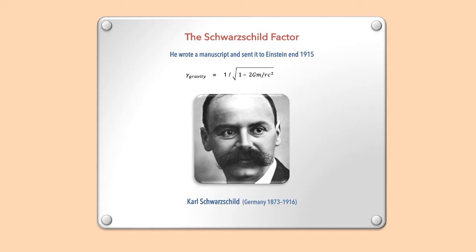Now I show you how to calculate gravitational time dilation. The German Karl Schwarzschild worked out the formula when he was in Russia during the First World War. He suffered from a rare skin disease and therefore died at the age of 42, just six months after he sent his formula to Einstein, who integrated it into his theory of relativity.